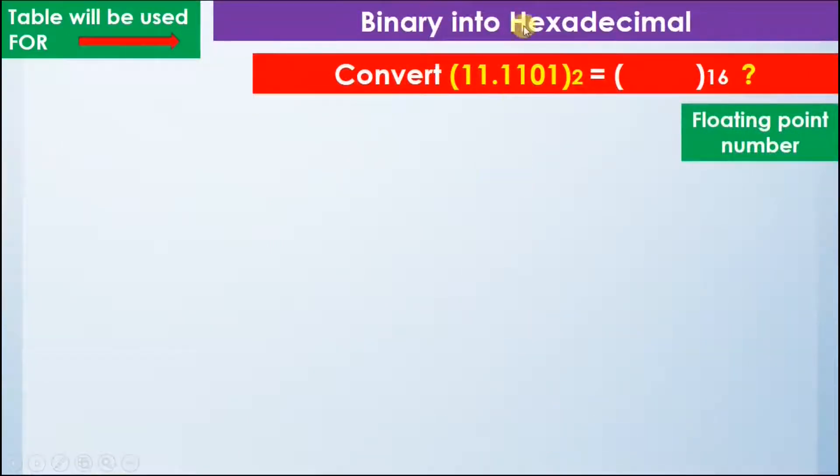In the next example, we will see how to convert a binary number into hexadecimal number using a floating point number. We know that 2 raised to power 4 is equal to 16, so we will have a table that has 16 rows and 4 columns.